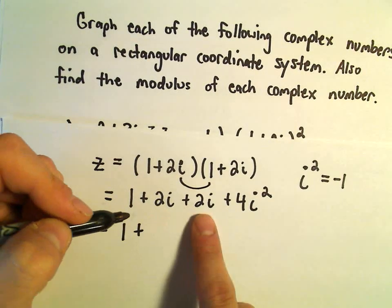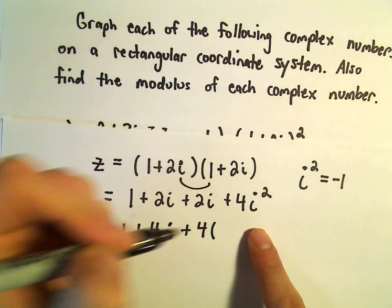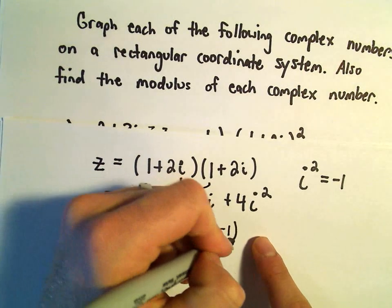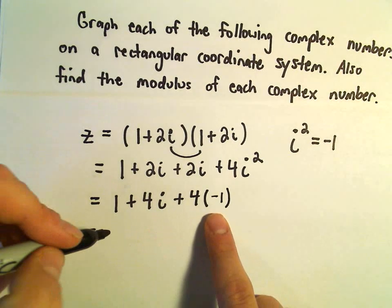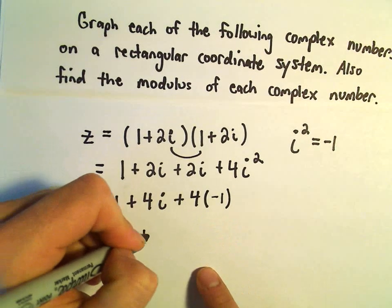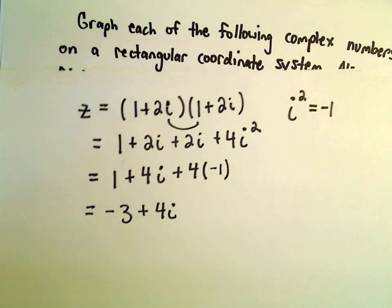We've got 1 plus 2i and 2i will be 4i, and 4 i squared. i squared though is negative 1. So really we have 1 minus 4 which is negative 3 plus 4i. This will be the complex number that I'm going to graph.